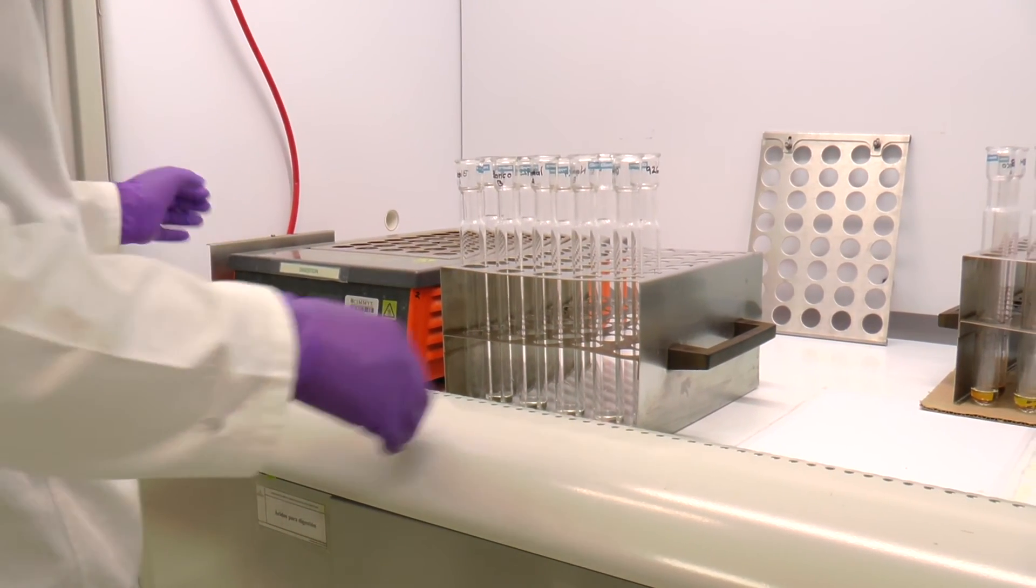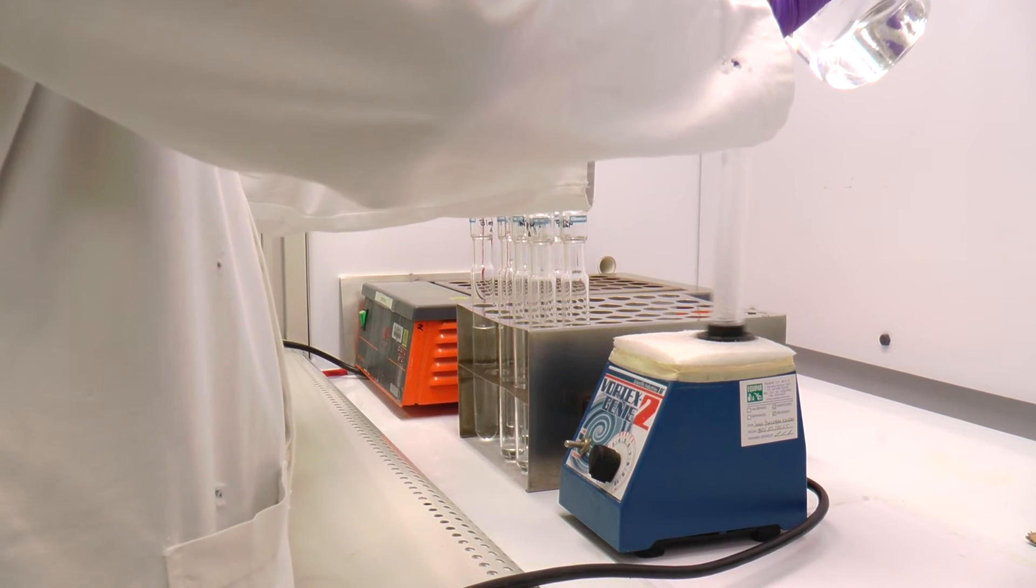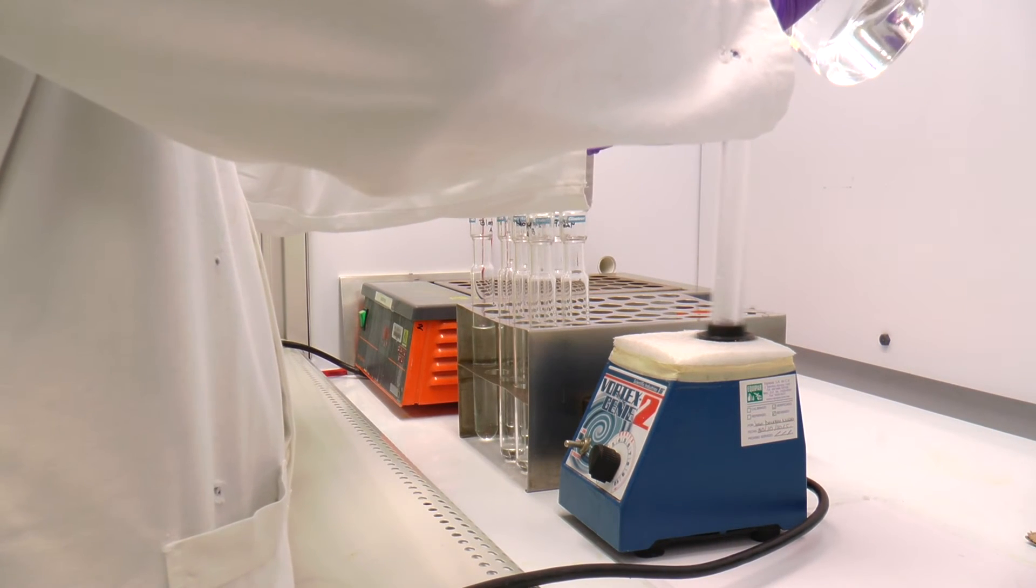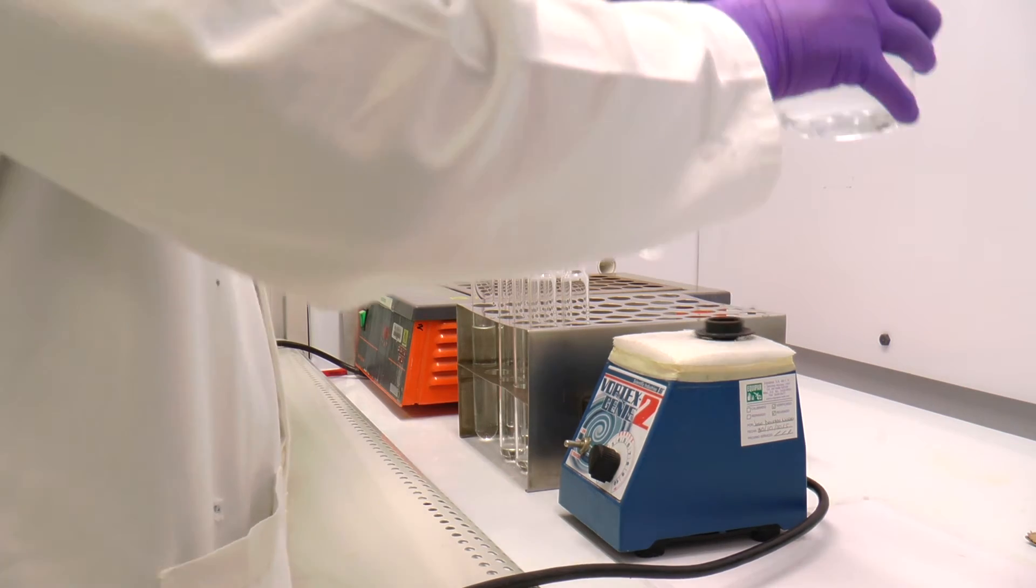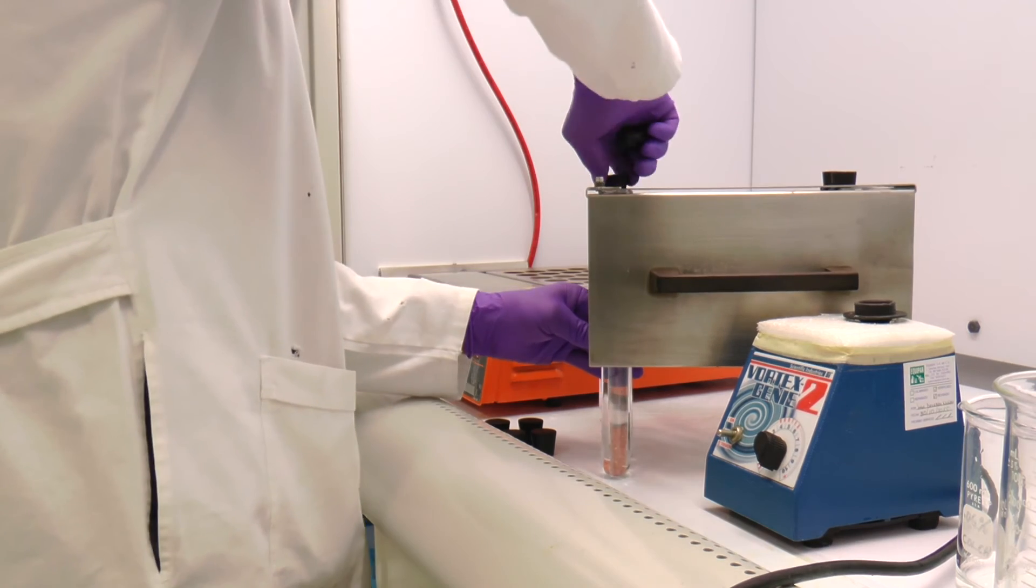The sample in each tube should be a transparent liquid. Add deionized water halfway up the tubes and shake in a vortex until all particles are dissolved. Dilute to 75 ml with deionized water.